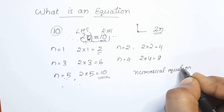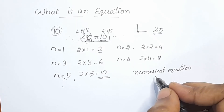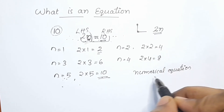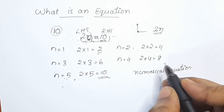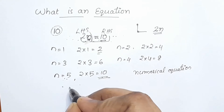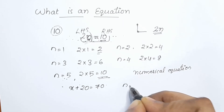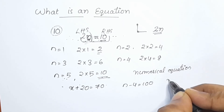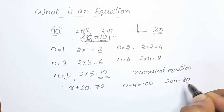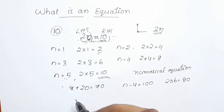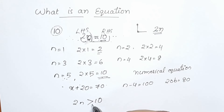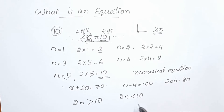Variable equations. x plus 20 is equal to 70. n minus 4 is equal to 100. 20b is equal to 80. 2n greater than 10.